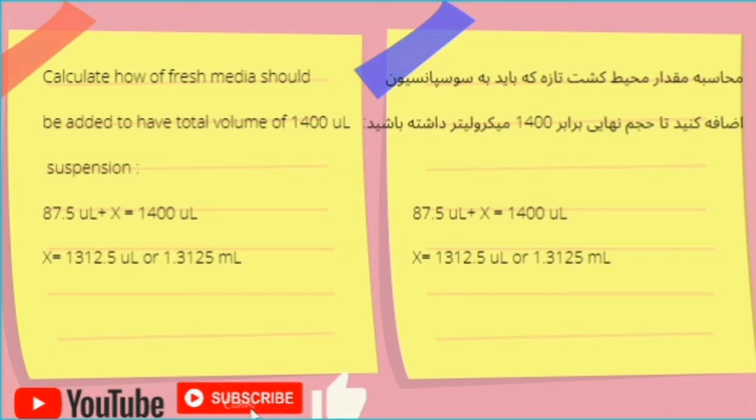But the total amount of media was 1,400 microliters. So you should take 1,312.5 microliters of fresh media as the remaining volume to make a total volume of 1,400 microliters.